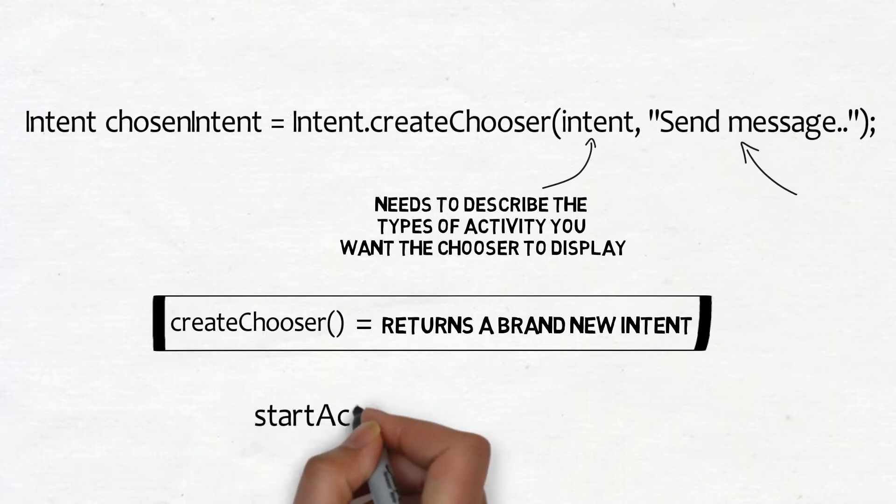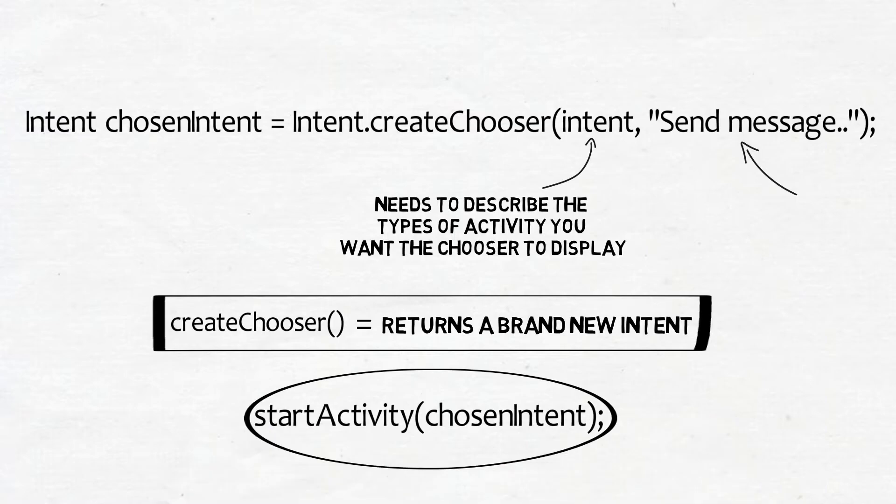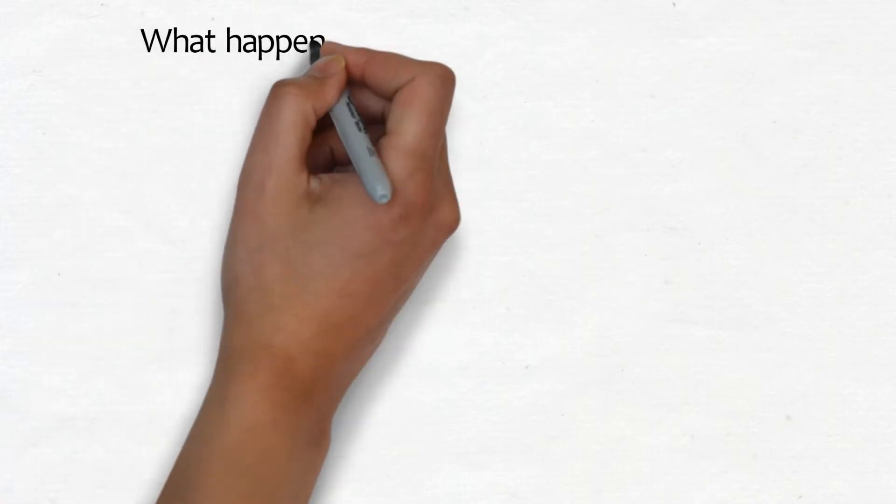To start the activity the user chose, you need to call startActivity with the chosen intent. Now let's see what happens when you call createChooser.